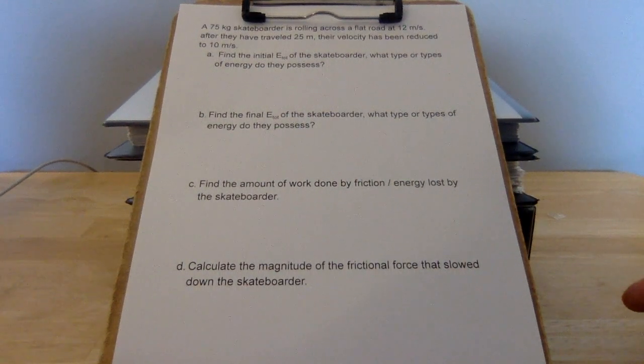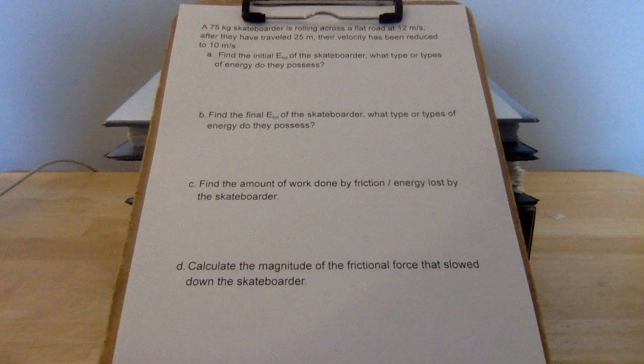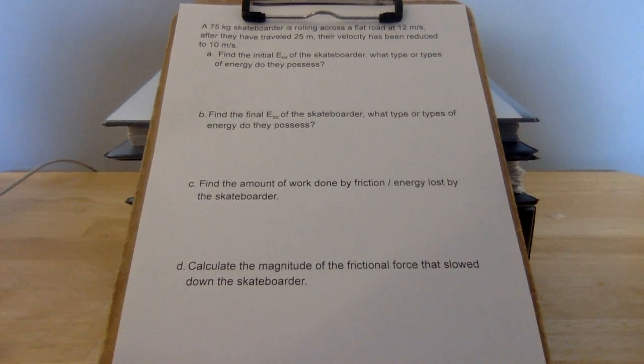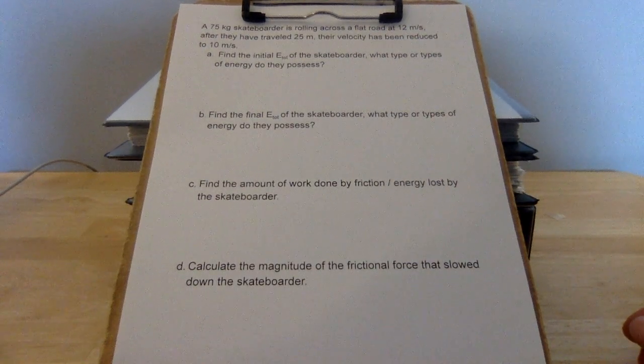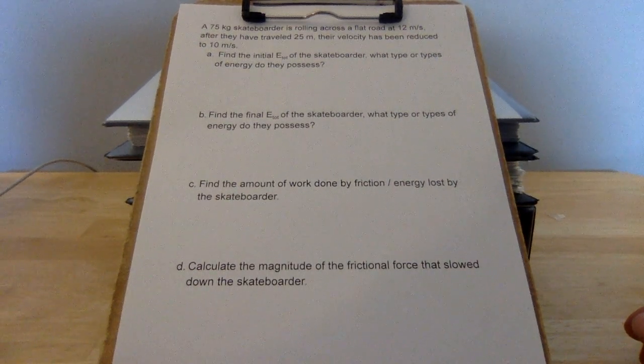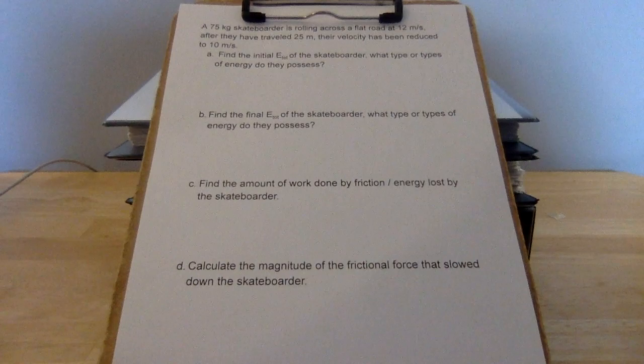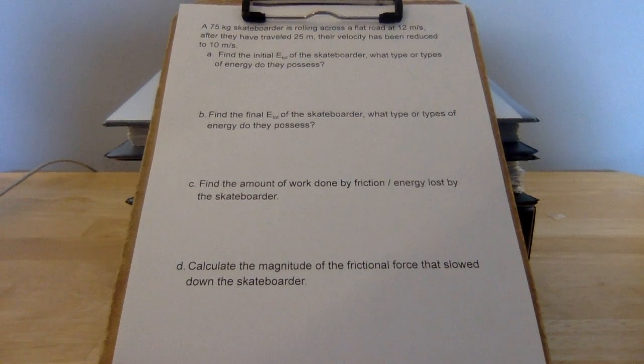First thing we've got to do is find the initial e-total of the skateboarder and figure out what type or types of energy we are working with. In this scenario, rolling across a flat road means there is no change in height. This means we do not care about potential energy. The skateboarder is, however, rolling with a non-zero velocity, so we definitely care about kinetic energy.